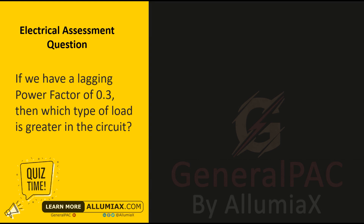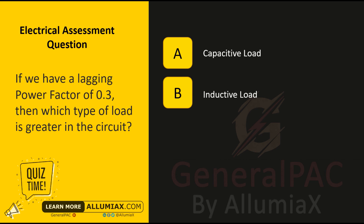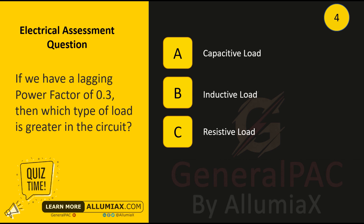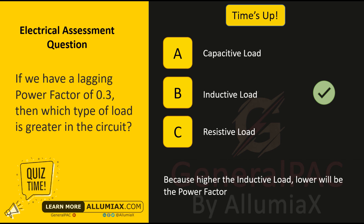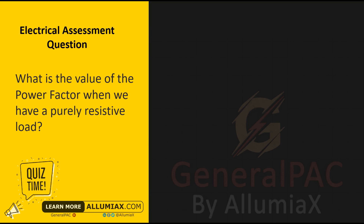If we have a lagging power factor of 0.3, then which type of load is greater in the circuit? A: Capacitive load, B: Inductive load, C: Resistive load. Time's up. The answer is B: Inductive load, because the higher the inductive load, the lower will be the power factor.